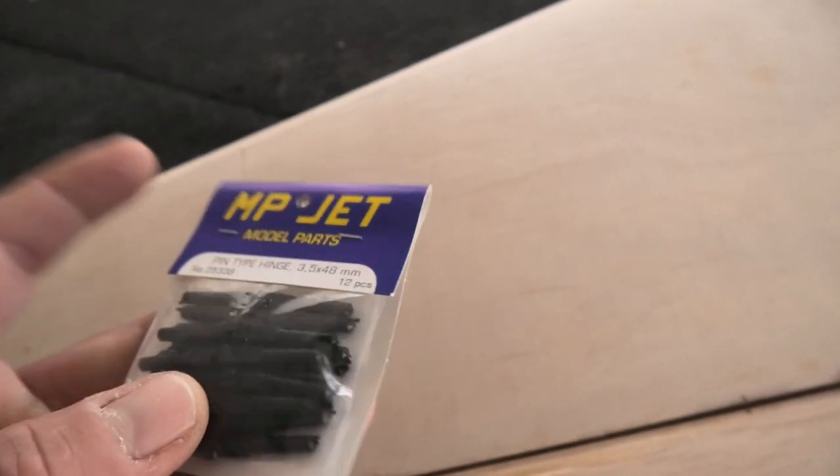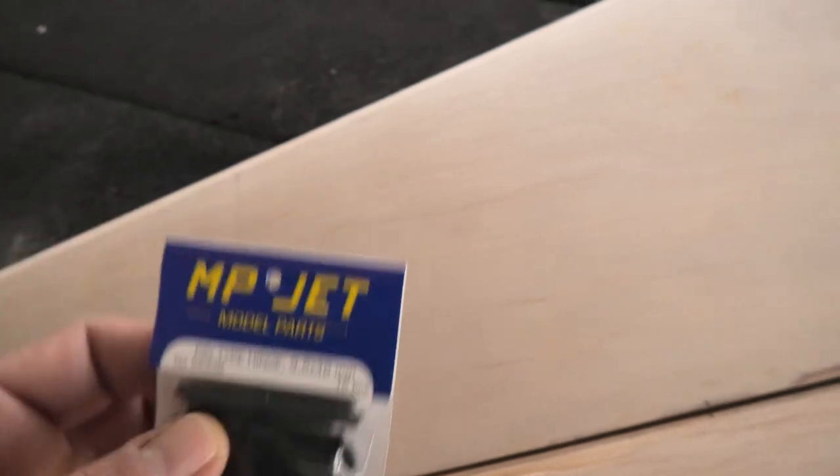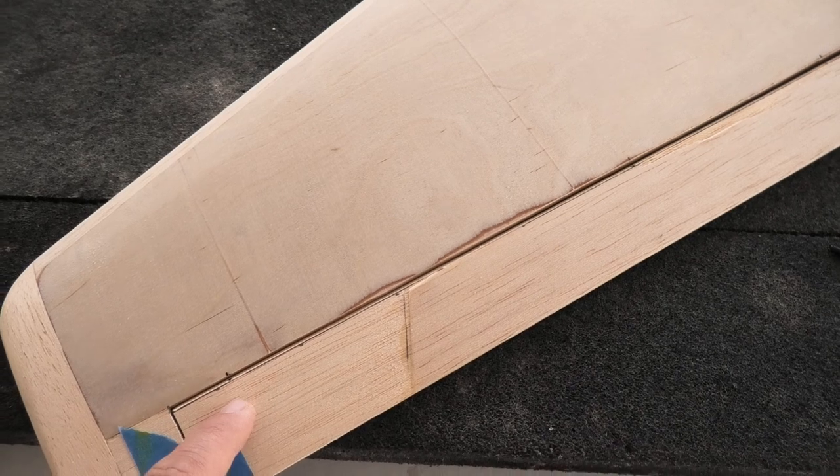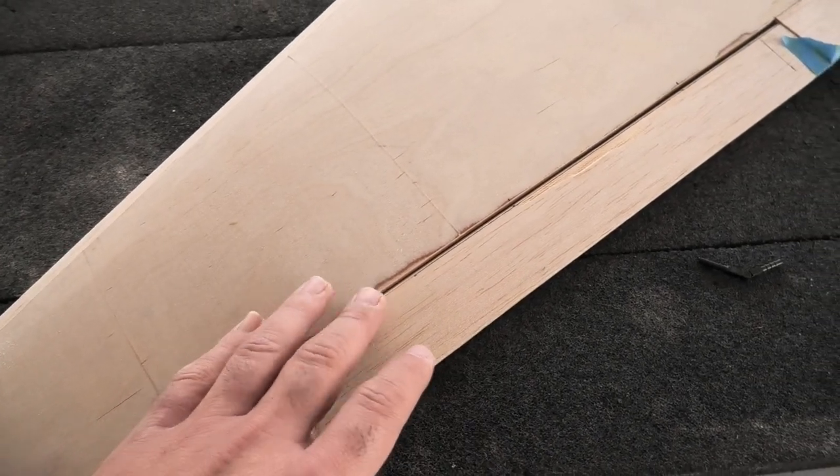Part number is right there, 2533B. There's also white ones if you want whites. Twelve in a pack, so plenty. I've marked these and I'm just going to transfer these lines to the faces of the surfaces and drill some holes.